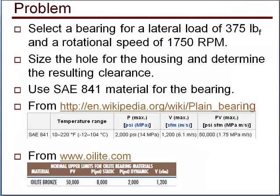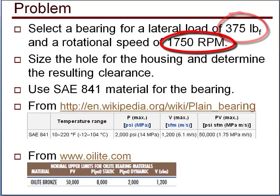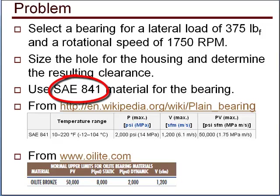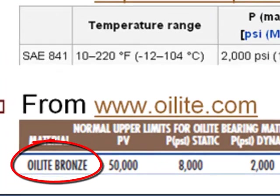Here's a problem. We need to select a bearing for a lateral load of 375 pounds and a rotational speed of 1750 RPM. Now, let's use the design equations to select the bearing for this problem. We're going to use SAE 841 material for the bearing, which is oil impregnated sintered bronze. This also has a trade name of oilite bronze.